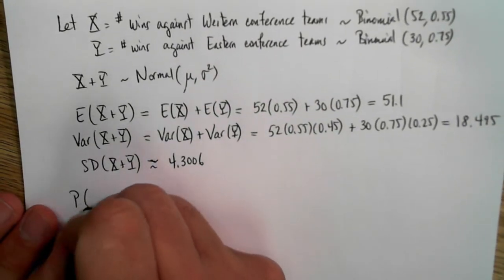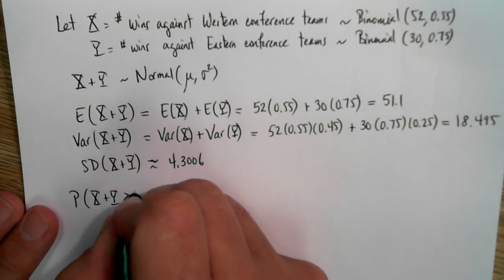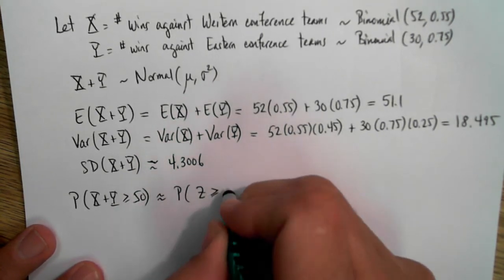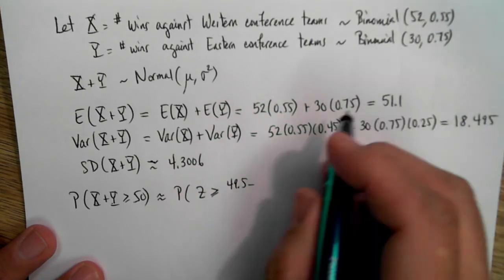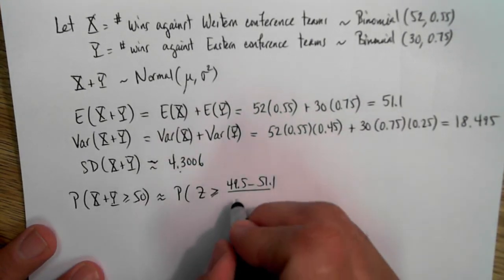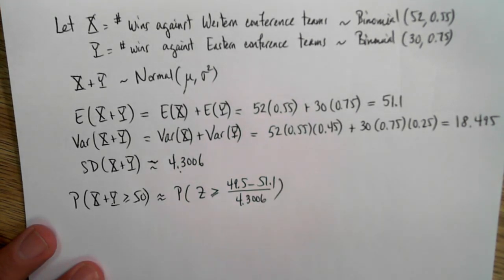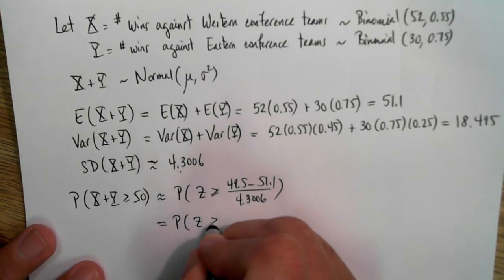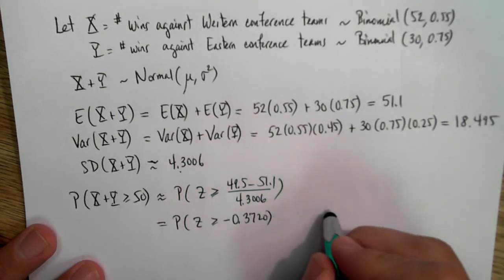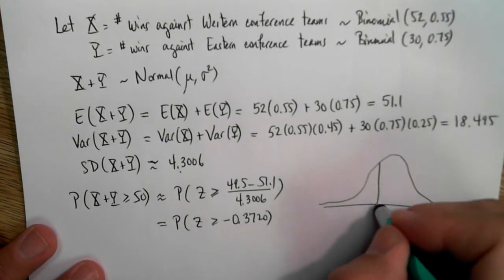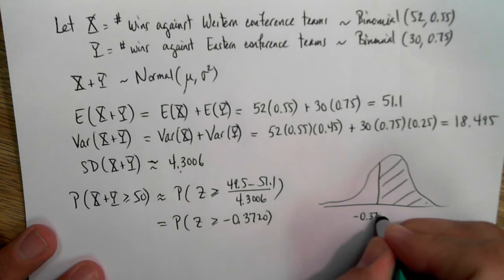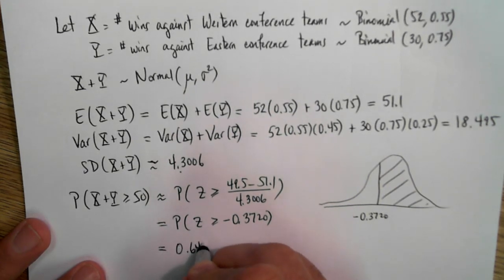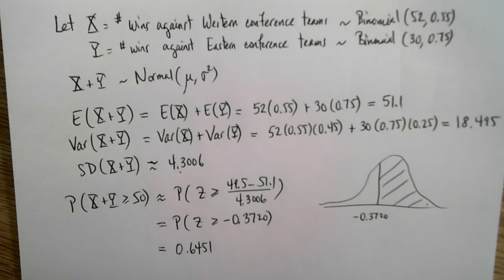The probability that X plus Y is greater than or equal to 50: since X plus Y is a discrete random variable, I apply the continuity correction. That's the probability that Z is greater than or equal to 49.5 minus the mean 51.1, divided by the standard deviation 4.3006. Doing the arithmetic, that's the probability that Z is greater than or equal to negative 0.3720. Using my calculator or table, this works out to be 0.6451. So the chance that the Mavericks win at least 50 games is 64.5%.